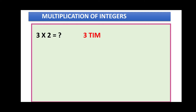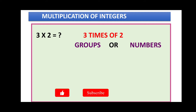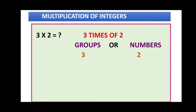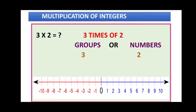Let us start with an example: three times two, or three multiplied by two. We can write it as three times of two. Here we have groups and numbers. The groups are three and the numbers are two.